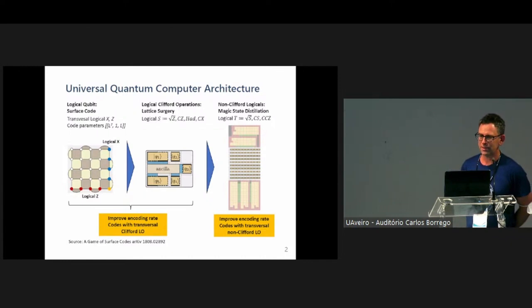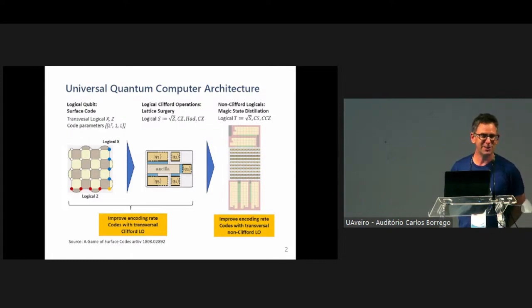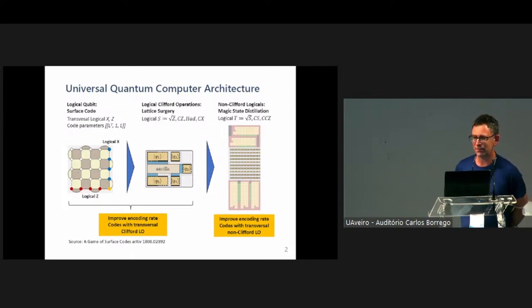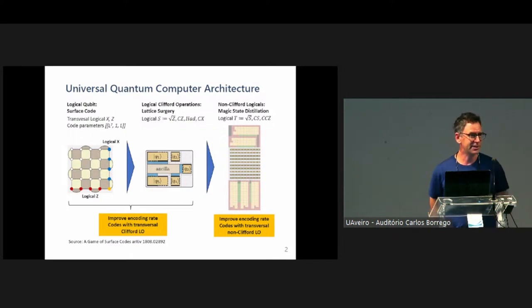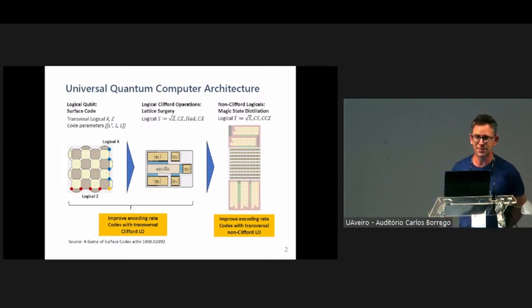I'm going to spend a little bit of time talking about diagonal gates and diagonal logical operators. You might be wondering why anyone would care about that and why this is an important question. The answer is that it really fundamentally affects the architecture of your universal quantum computer. On this slide I have one of the proposed architectures done by Daniel Latinski in the Game of Surface Codes paper.